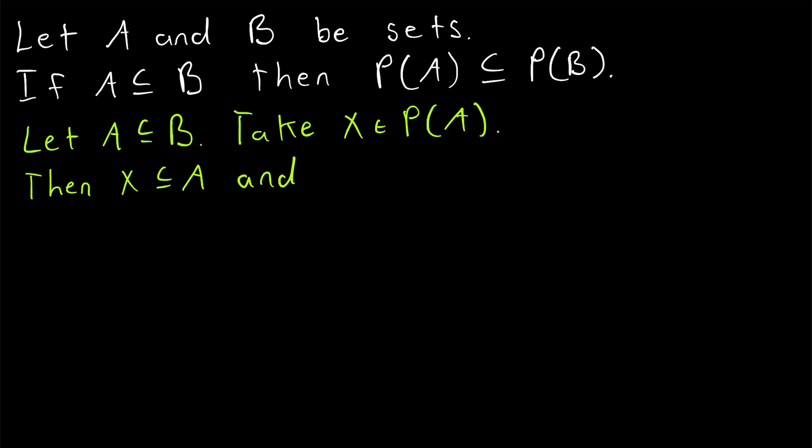Since X is a subset of A, and A is a subset of B, by the transitive property of subsets, we know that X is also a subset of B.